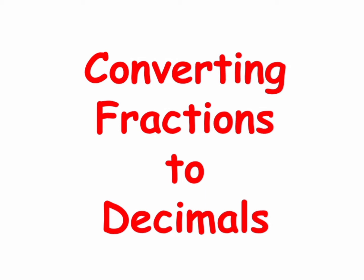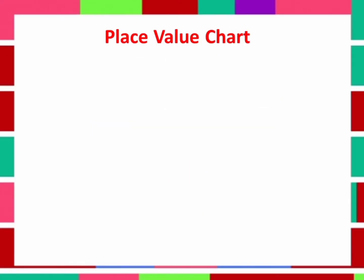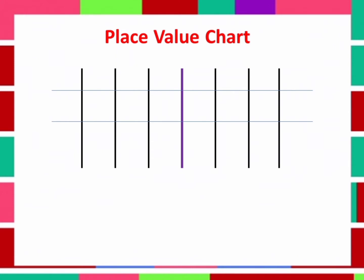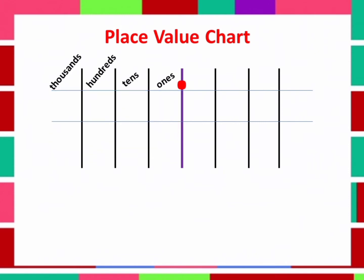Let us use the place value chart. The decimal point will be here. At the left side of the decimal is the whole number — ones, tens, hundreds, thousands, and so on. At the right side of the decimal is the fraction part.